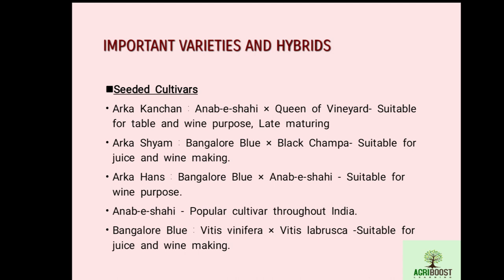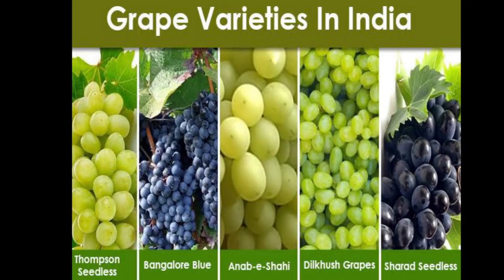Bangalore Blue is a cross between Vitis vinifera and Vitis labrusca, suitable for juice and wine making. Important grape varieties grown in India include Thompson Seedless, Bangalore Blue, Anab-e-Shahi, Dilkush, and Sharad Seedless.